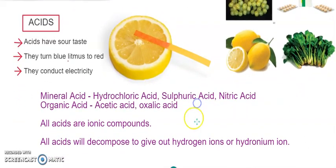The basic understanding of acid: all acids are ionic compounds. The cation or positive ion in all acids is the hydrogen ion. The negative part of the ion can be chlorine, sulphate, nitrate, or phosphate.